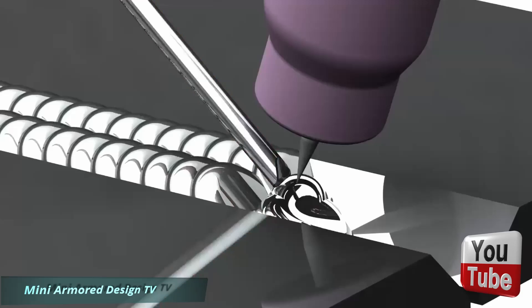You can TIG weld with or without filler metal, and that's not a choice you have in a lot of welding processes. If you want to add filler metal to a TIG weld, you use a filler rod, which is just a rod of metal with a specific alloy. You want to make sure that the filler metal you're using is compatible with the base metal and that it has the strength required to do the job.